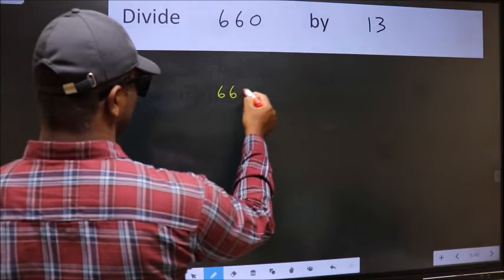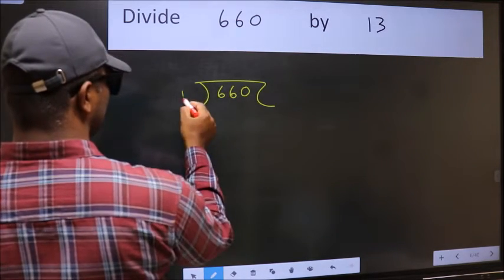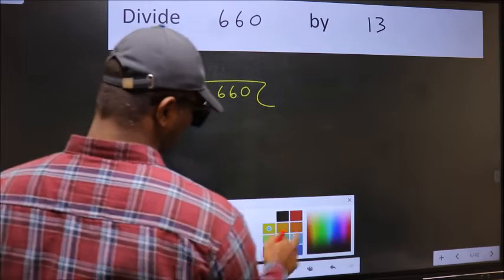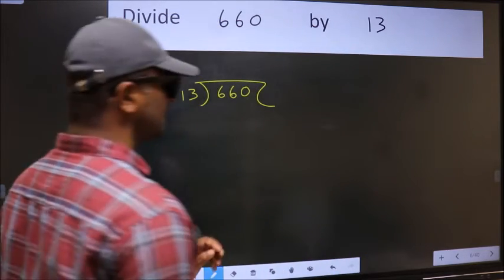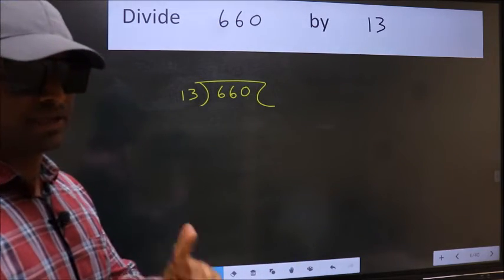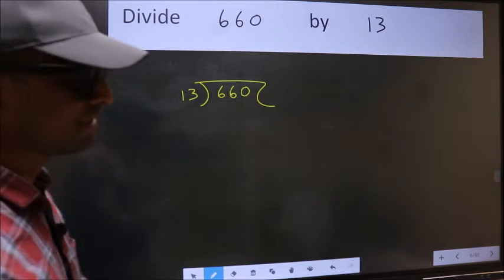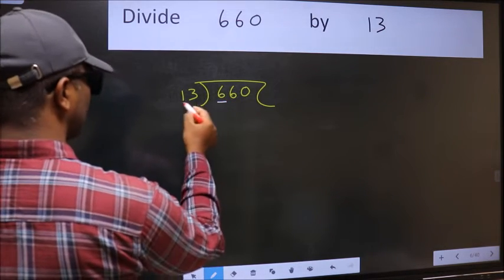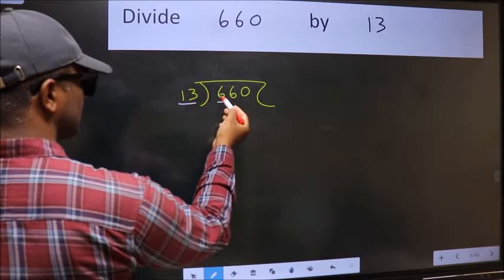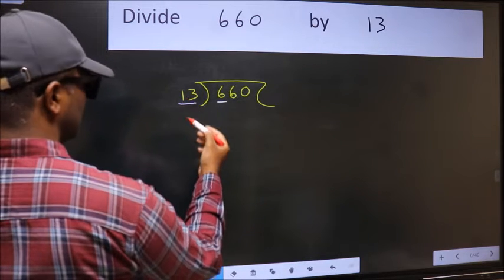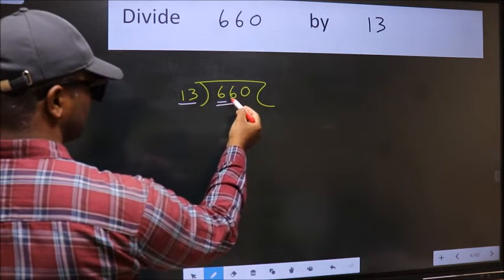660 and 13 here. This is your step 1. Next, here we have 6 and here 13. 6 is smaller than 13, so we should take two numbers, 66.